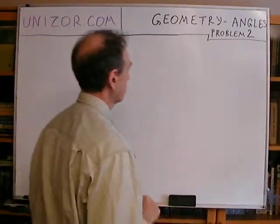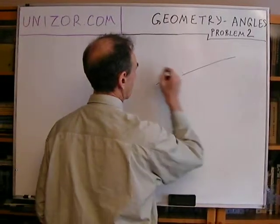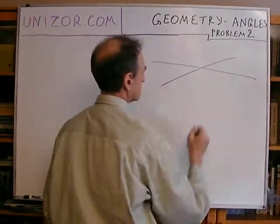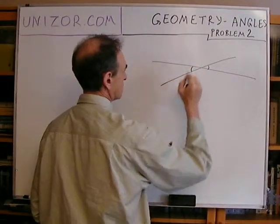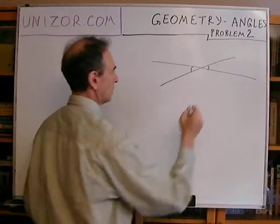Here is what is necessary to prove. Let's consider you have vertical angles. Let's say this one and this one. What needs to be proven is the following.